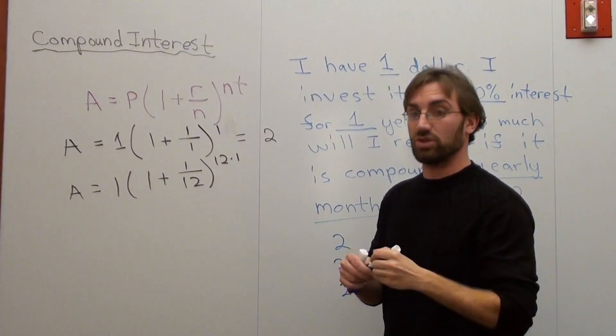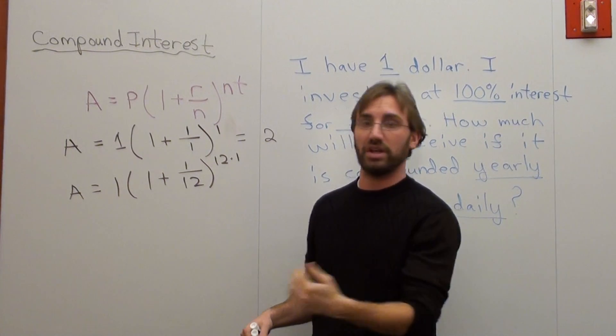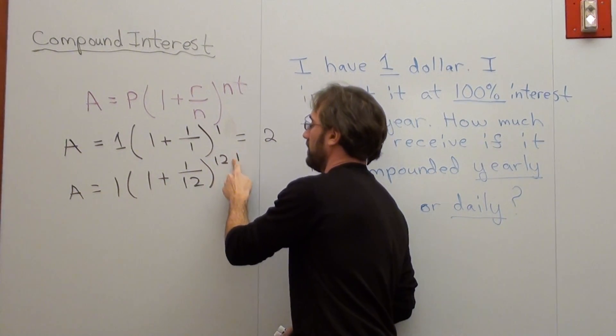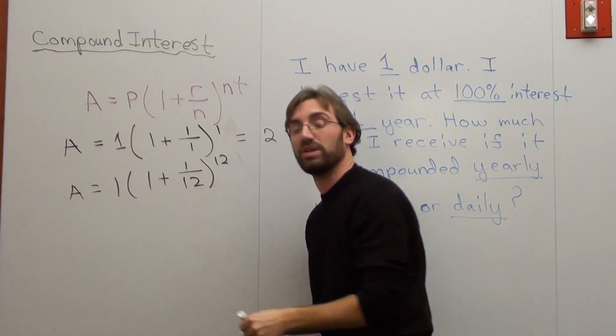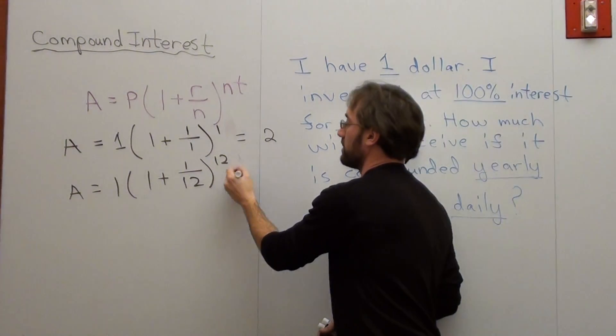But I tell my students to do this problem. I tell them, do 1 divided by 12 first. Then add 1. Then take it to the power of 12. Then multiply by 1. And your answer varies slightly. It's $2.61.